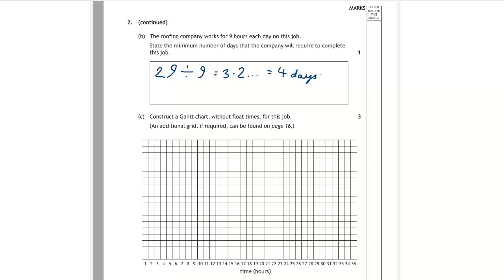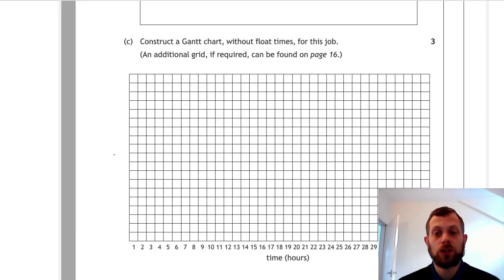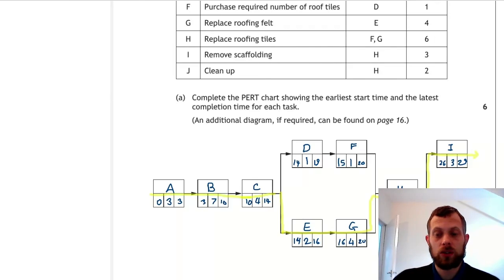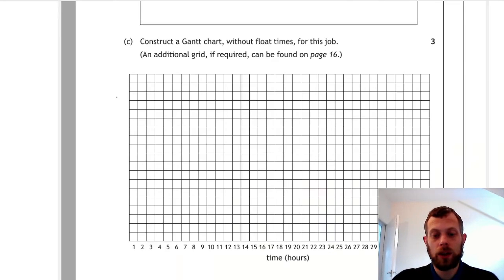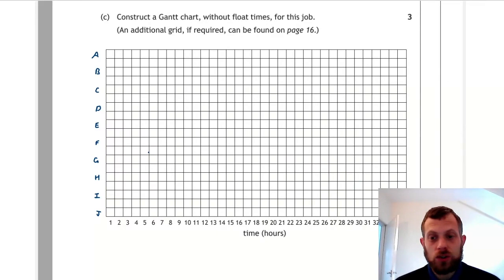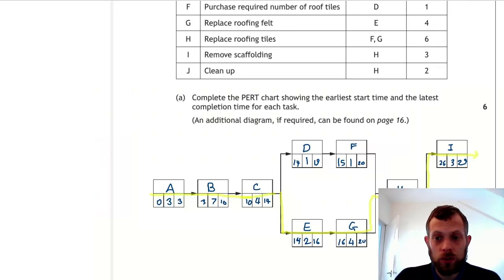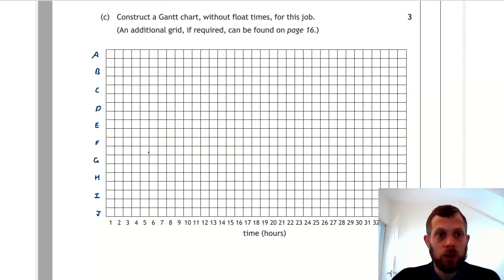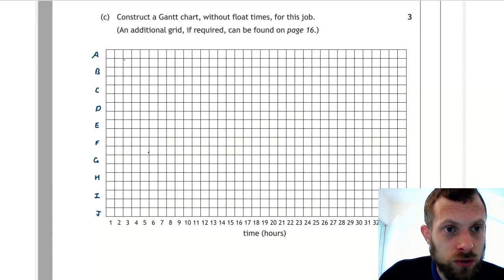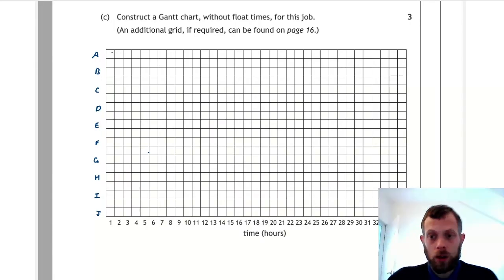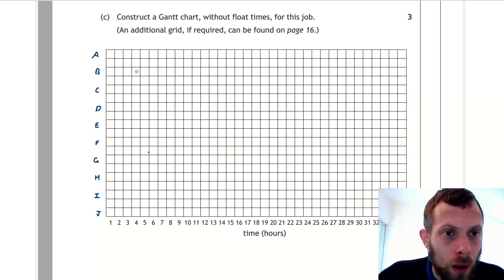Now we're being asked to produce a Gantt chart using our PERT chart. On the vertical axis we will have labels for each of the tasks, and we just about have space to fit them all in. Going from task A to J, you can see we can only just fit them in with space in between them. Now looking at task A, the task A starts at zero and finishes at three hours.